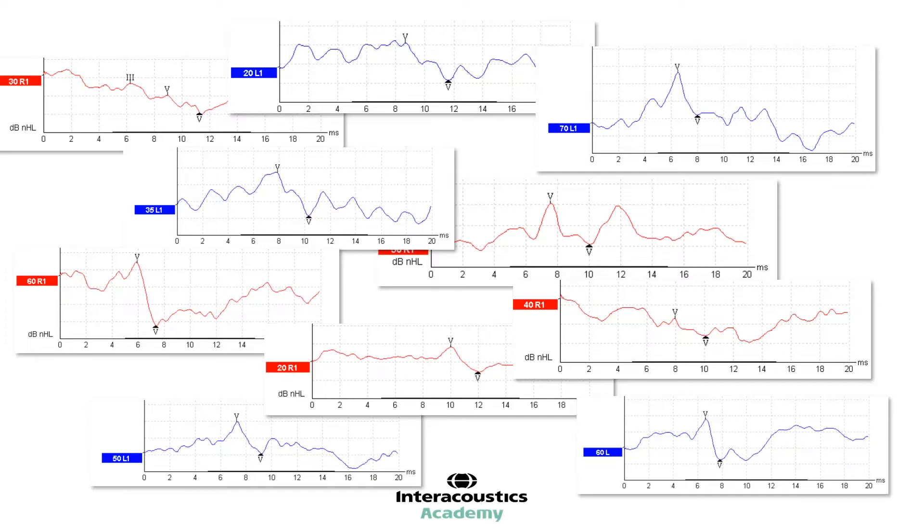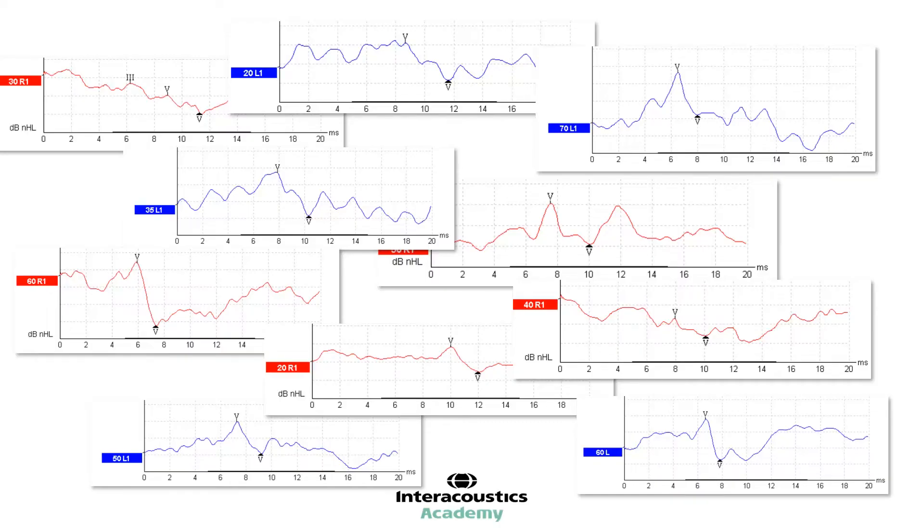The key to determining whether an ABR response is present, and therefore whether the patient can hear the sound being presented to their ear, is identifying wave 5. There are some fundamental principles that can help in this process.